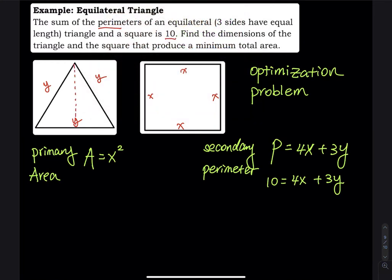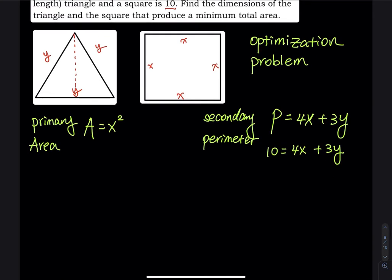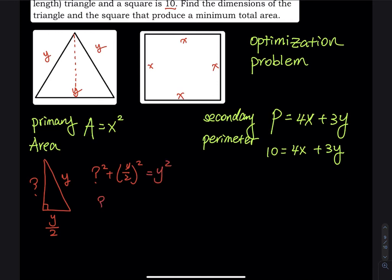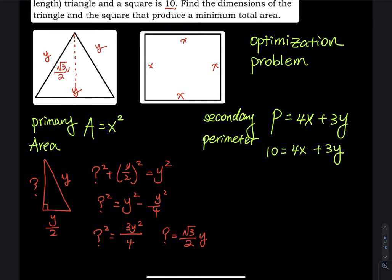Let's cut the equilateral triangle into two pieces. The full side is y, and half the base is y divided by 2. Using the Pythagorean theorem: the unknown height squared plus (y/2) squared equals y squared. So h² = y² − y²/4 = (4y² − y²)/4 = 3y²/4. Taking the square root, the height equals (√3 / 2) · y.